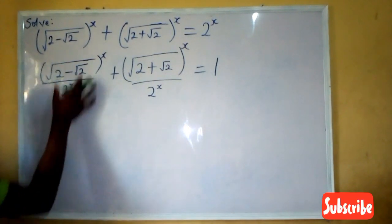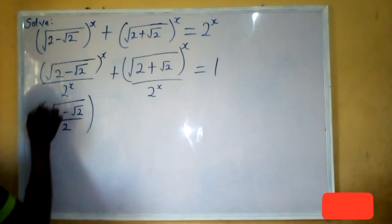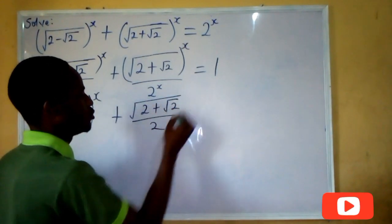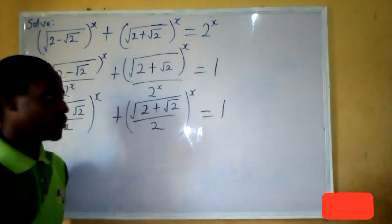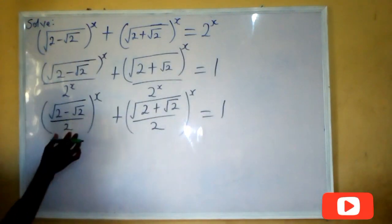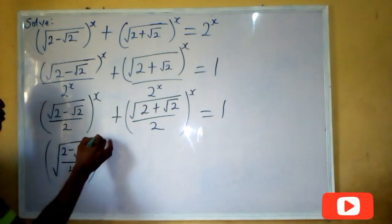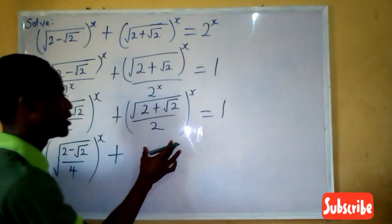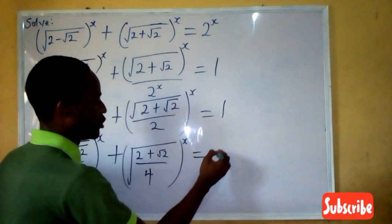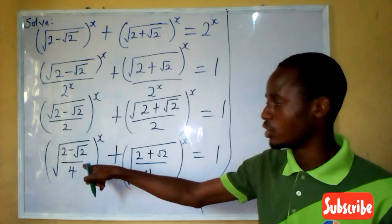So thereafter, I do some arrangement. That gives me the root of 2 minus root 2, all over 2, raised to power x, plus the root of 2 plus root 2, all over 2, all raised to power x, and that gives 1. That is the first step. The second step is now trying to bring out what is inside the bracket and resolve it. You agree with me that what is in the bracket is the same as root of 2 minus root 2, all over 4, all raised to power x, plus the root of 2 plus root 2, all over 4, all raised to power x. Everything equals 1.